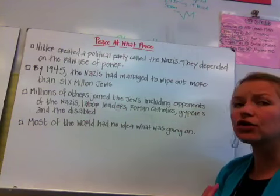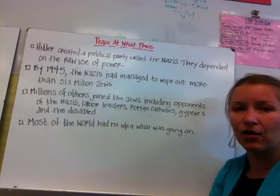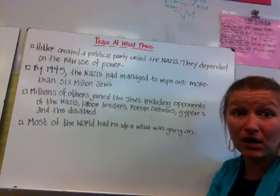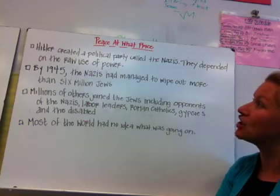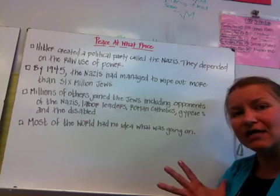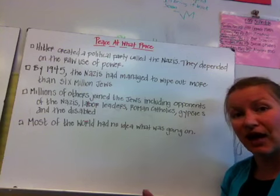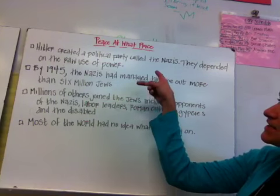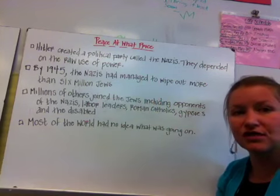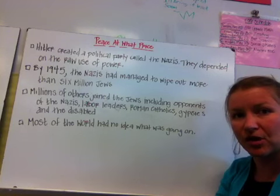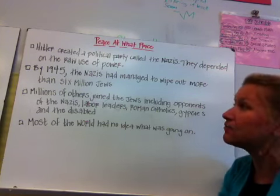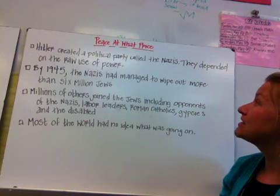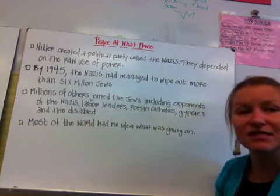Hitler created a political party that took power very, very quickly — it was scary how fast the Nazis rose to power. We'll look at graphs and charts displaying that rise of power in class tomorrow. They wanted to use that power to bring Germany back to what it had been in previous years, and by 1945 the Nazis had managed to wipe out more than six million Jews.